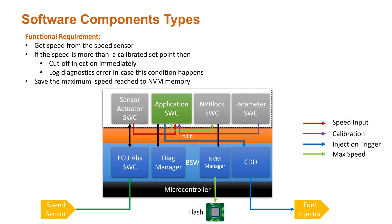To save the data, the ECU has an external data flash IC which is handled from the BSW layer, like the memory abstraction layer. The application layer need not worry about how to save and retrieve the data — that all depends on the base software and its abstraction layers. During startup, the NVM manager handles restoring the speed data from external memory and passes it to the application layer using the NV block software component. The properties and settings of how the variable is stored and retrieved are all controlled from the configuration in the NV block component.